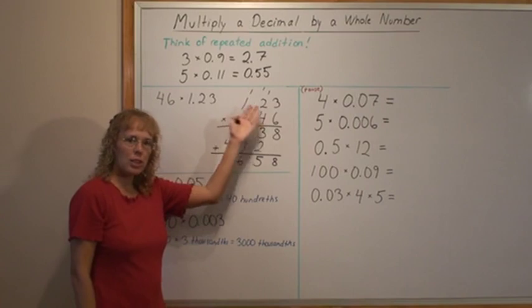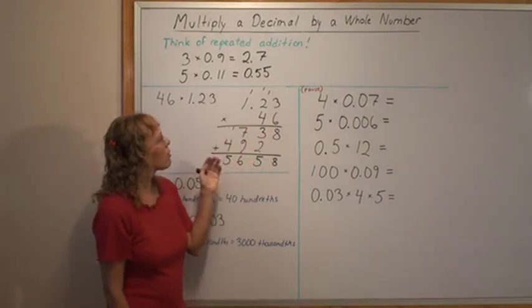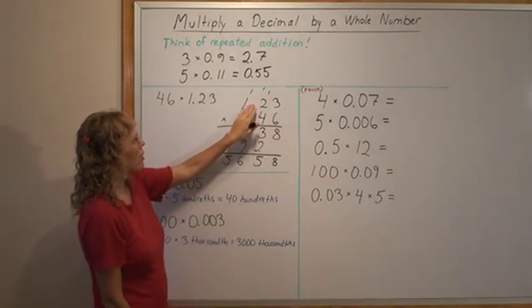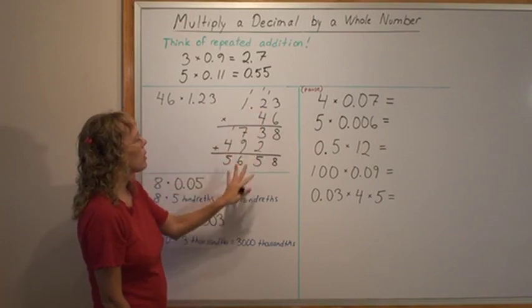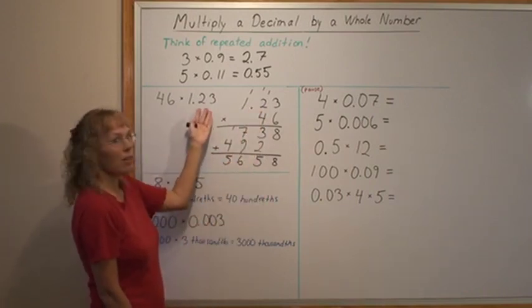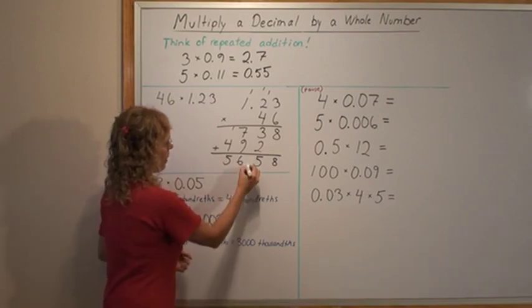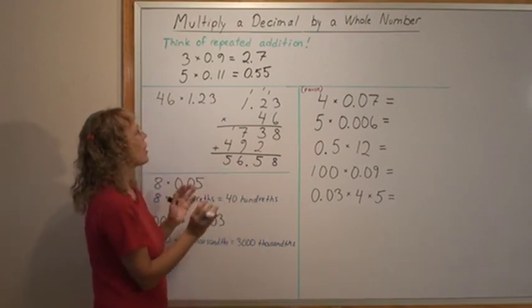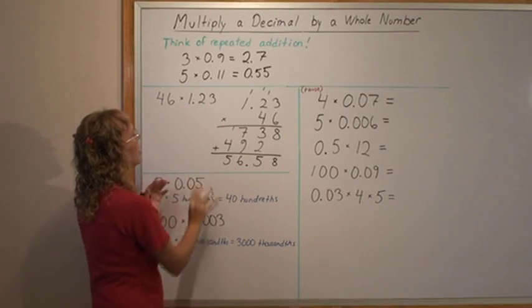So as a shortcut we can just use normal multiplication algorithm and multiply here as if there was no decimal point. Just multiply normally. Then when we get the answer we think well the answer must have hundredths. Because of what I just explained it is like adding this number many many times.